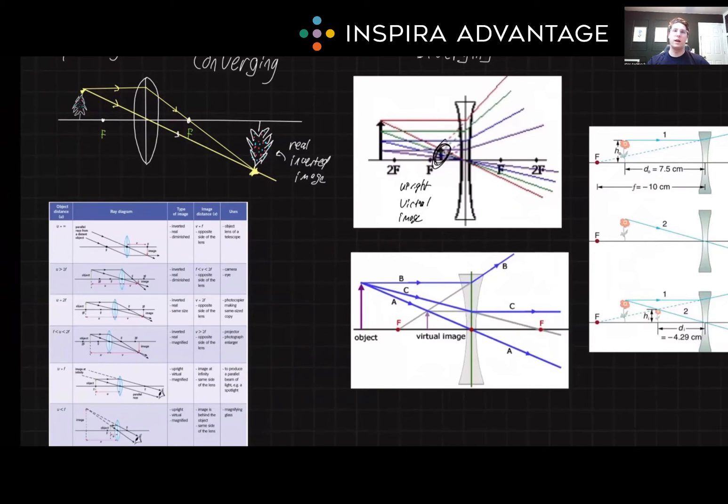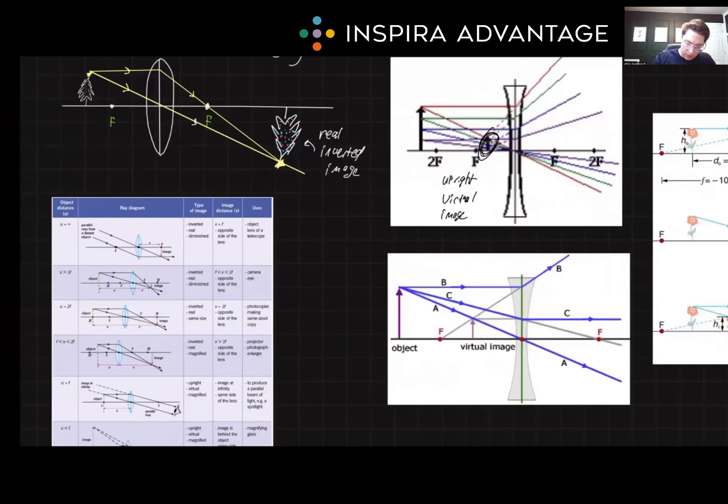Virtual images, however, are upright and cannot be projected. They appear to be located behind the lens and are formed when an object is inside the focal length of converging lenses or at any position in a diverging lens. So let's see why this makes sense.